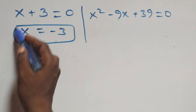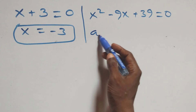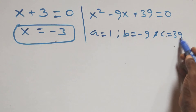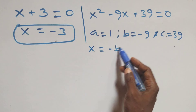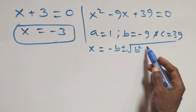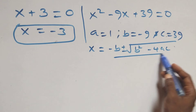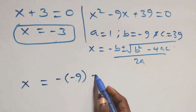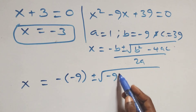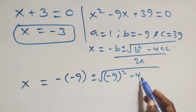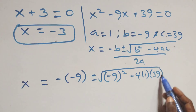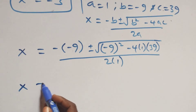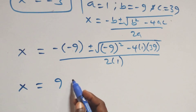From the first sub-case, x equals to minus 3, which is a real solution. For the quadratic x squared minus 9x plus 39 equals zero, we have a equals 1, b equals minus 9, and c equals 39. Applying the quadratic formula x equals minus b plus or minus square root of b squared minus 4ac over 2a, this becomes x equals 9 plus or minus square root of 81 minus 156 over 2.